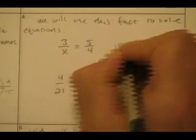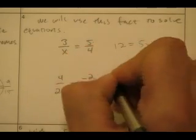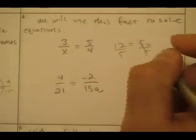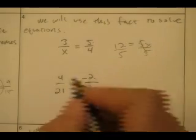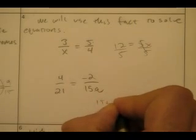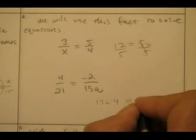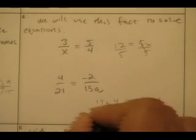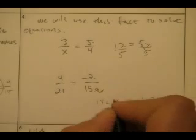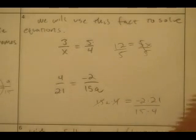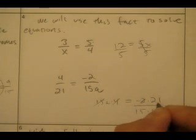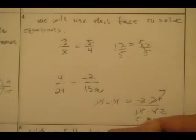Three times four is twelve, which equals five times x. Divide by five and x is twelve-fifths. For the next one: fifteen-a times four on one side equals negative two times twenty-one. Divide both sides by fifteen times four and I get a equals negative seven-tenths.